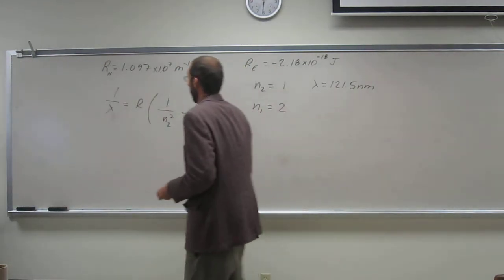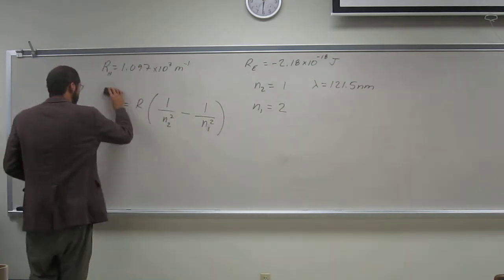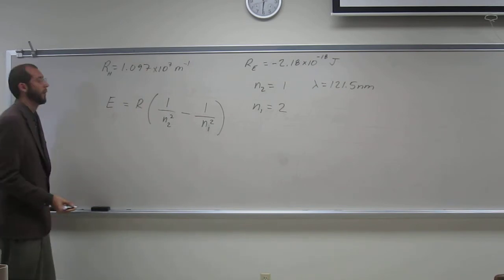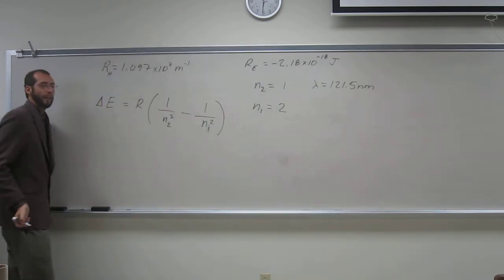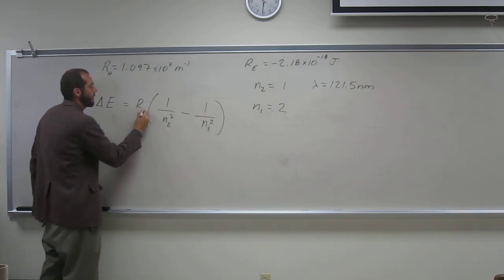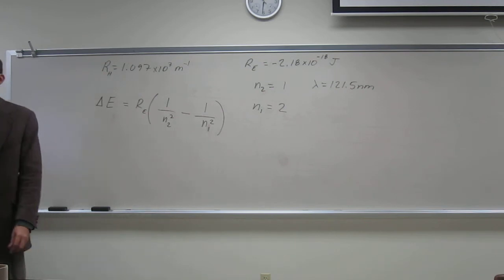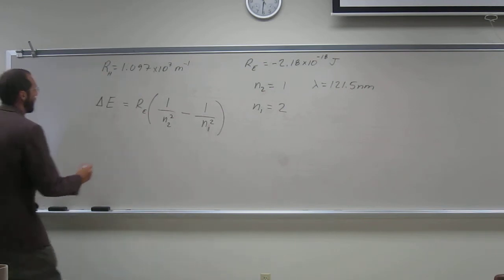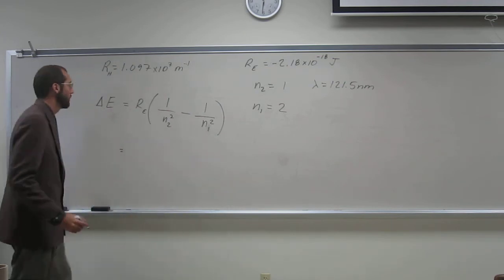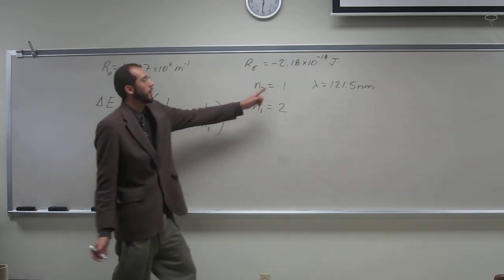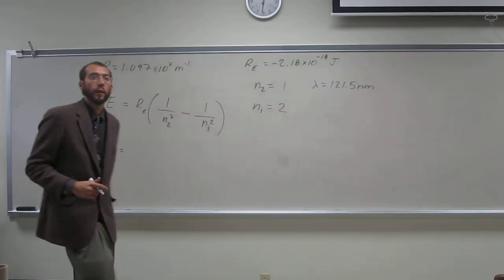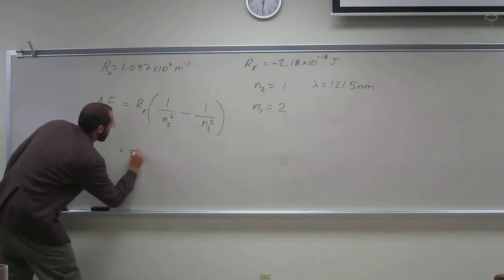So now let's change the Rydberg equation to the energy form of it. So a lot of times you'll see delta E. That just means the change in energy. When it's the energy, you're going to use the Rydberg energy constant. So you just plug in the same transition, same thing. Notice the Rydberg energy constant is not per joules, though, so you don't have to do that flip. Put that in. So it's actually much easier.